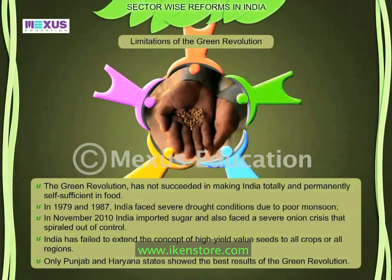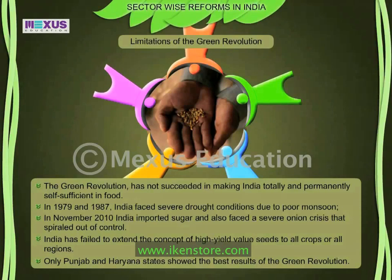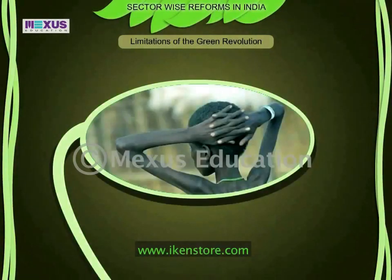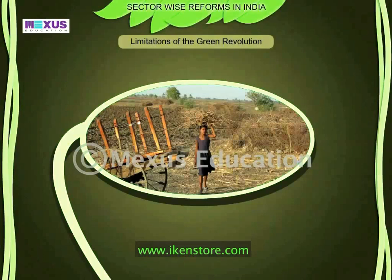In regional terms, only Punjab and Haryana states showed the best results of the Green Revolution. West Bengal also showed reasonably good results, but results were less impressive in other parts of India. The HYV seeds are more prone to risks. Moreover, it was feared that the Green Revolution would increase disparities between rich and poor farmers. Besides, there are places like Kalahandi in Orissa where famine-like conditions have existed for many years and some starvation deaths have been reported, raising questions about whether the Green Revolution has met its overall social objectives.